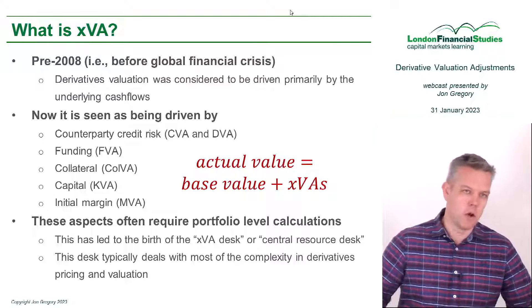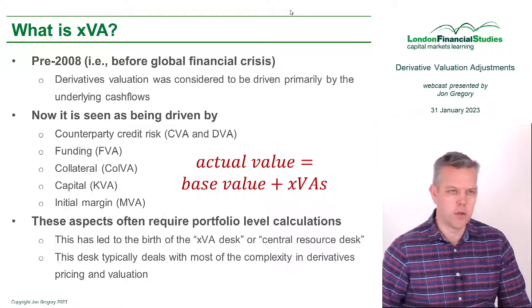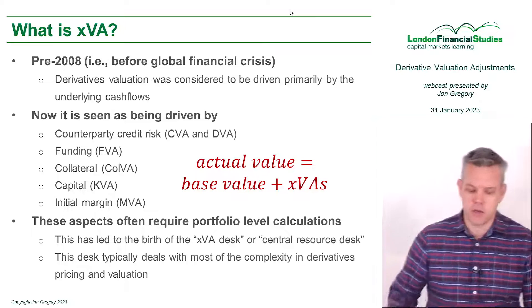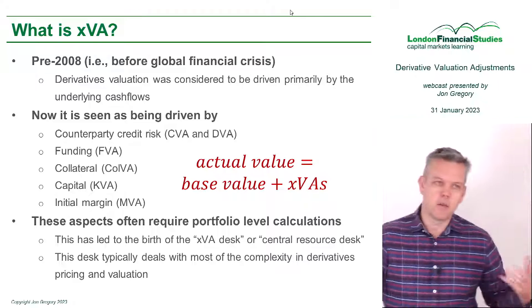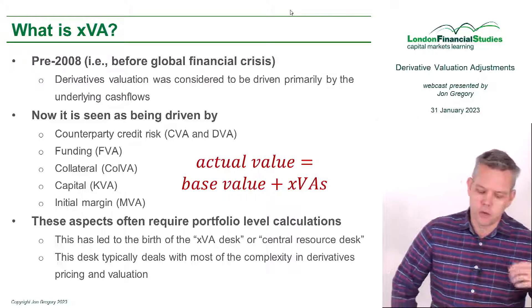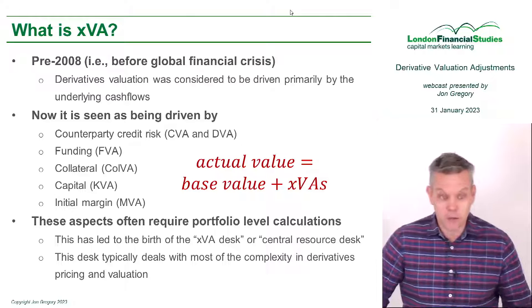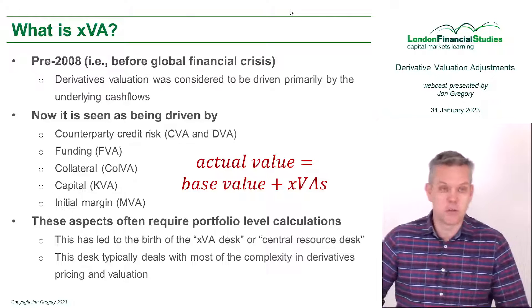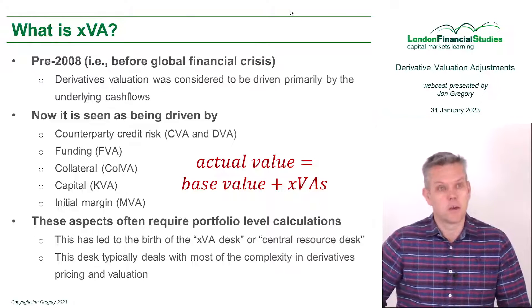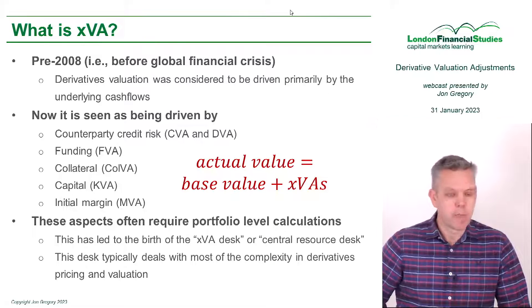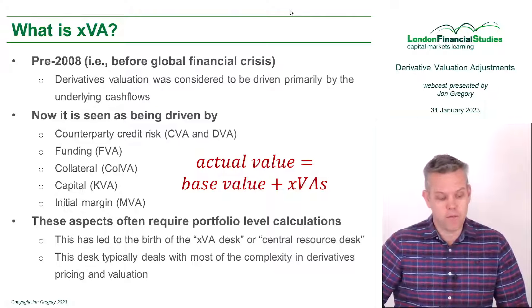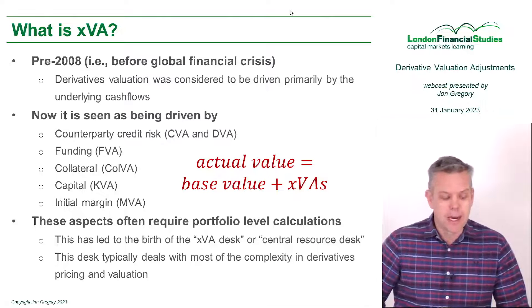And it won't mention a whole load of things that have happened since then. So now we really think that in addition to the cash flows, we need to consider counterparty credit risk, which is of course driven by CVA and DVA, and funding, which is FVA.